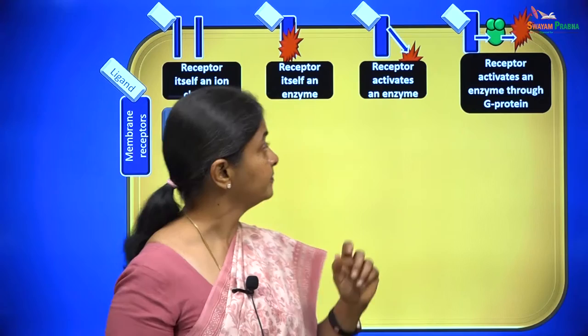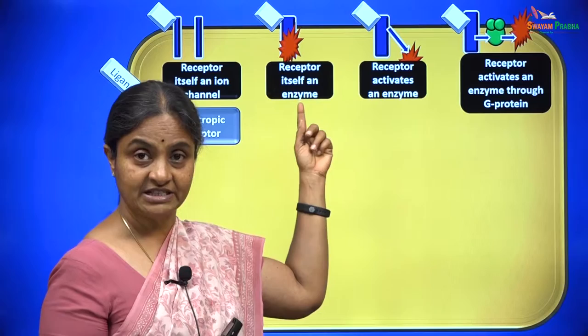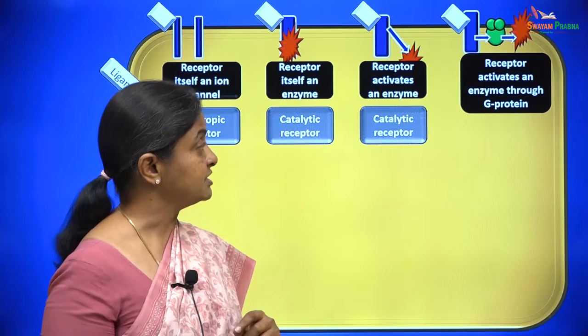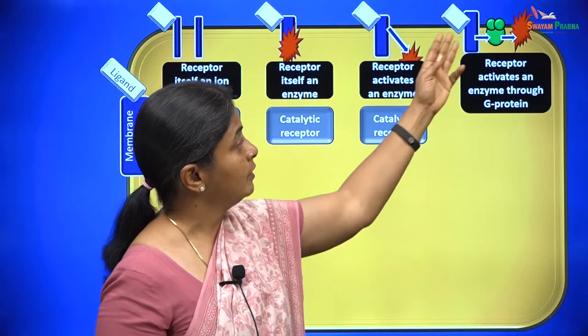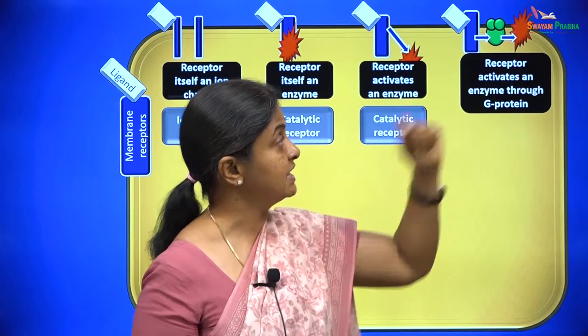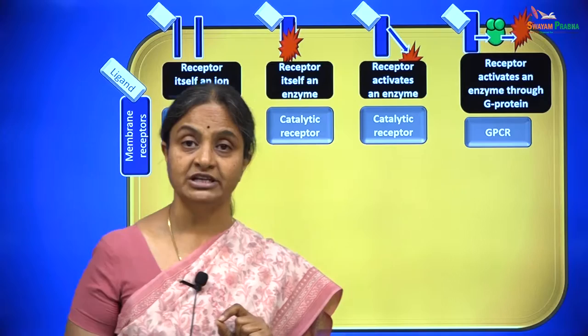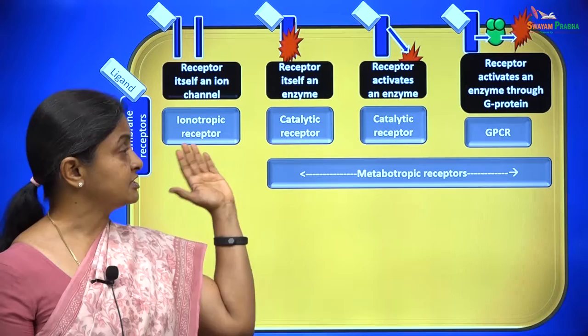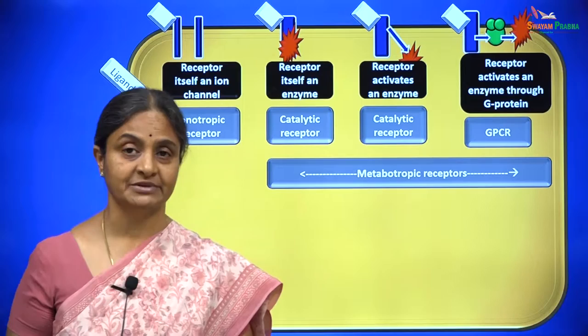While the first type is referred to as an ionotropic receptor, the types where the receptor itself is an enzyme or directly activates an enzyme are called catalytic receptors. If the ligand-receptor combination activates a membrane enzyme through a G-protein, that receptor is called a G-protein coupled receptor or GPCR. As against ionotropic receptors, these three types are referred to as metabotropic receptors.